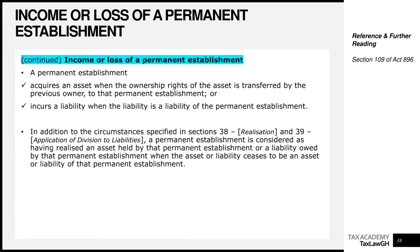A PE acquires an asset when the ownership rights of the asset are transferred by the previous owner to that PE. A PE incurs a liability when the liability becomes a liability of the PE. In addition to the circumstances in section 38 on realization and section 39 on modification of realization rules, a PE is considered as having realized an asset held by that PE or a liability owed by that PE when the asset or liability ceases to be an asset or liability of the PE.